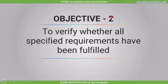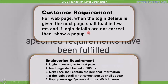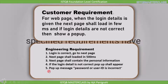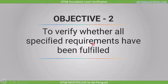The second objective is to verify whether all specified requirements have been fulfilled. We already know this requirement. Now we need to see if these requirements are fulfilled in the engineering requirement. After analyzing the customer requirement and asking questions, we finally have the engineering requirement: login is correct — go to the next page; next page shall load in 500 milliseconds; next page shall contain personal information; if login detail is not correct, popup shall appear; and the popup message is 'password or user ID is incorrect.' So by asking questions we got all the missing information included in the engineering requirement, and in each stage we verify whether all specified requirements have been fulfilled.